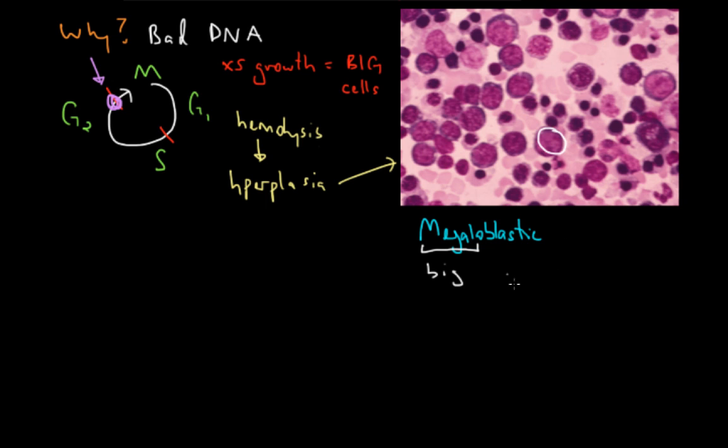And blastic refers to the fact that these cells are immature. This is why other types of cells you may have heard of before, like erythroblast or trophoblast, refer to cells that are immature, that haven't yet reached maturity, in which case they get the suffix cyte. So megaloblastic just means big, immature cells.